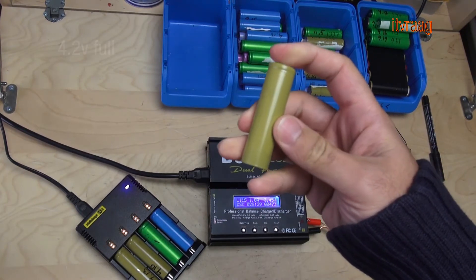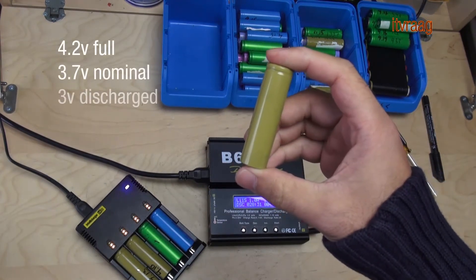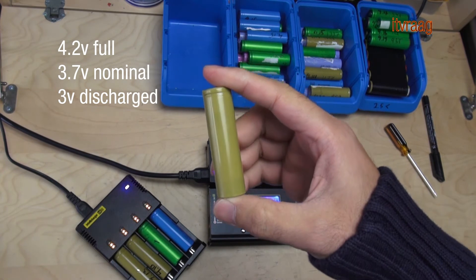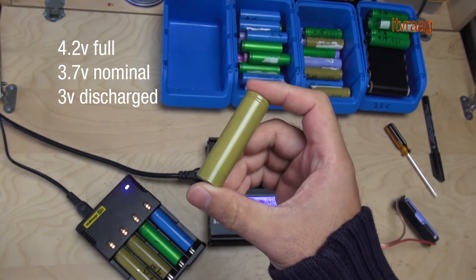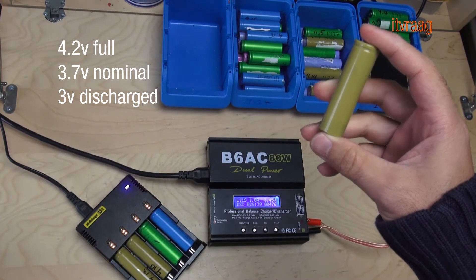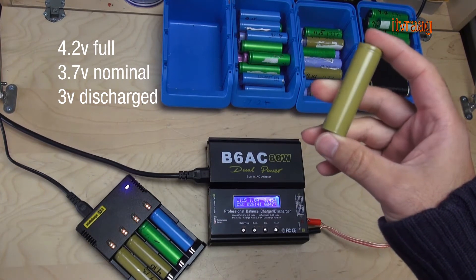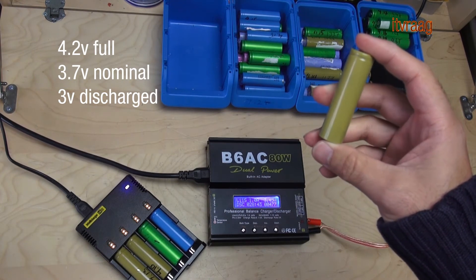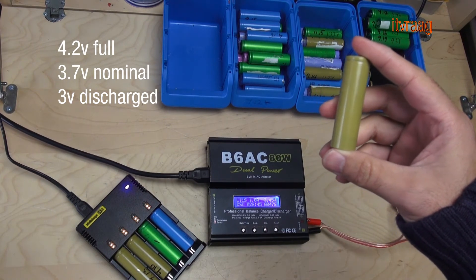Each cell has a voltage of 4.2 volts when fully charged, a nominal voltage of 3.7 volts, and 3 volts when discharged. You really shouldn't discharge a cell below 3 volts as that reduces the life expectancy or even causes fire.